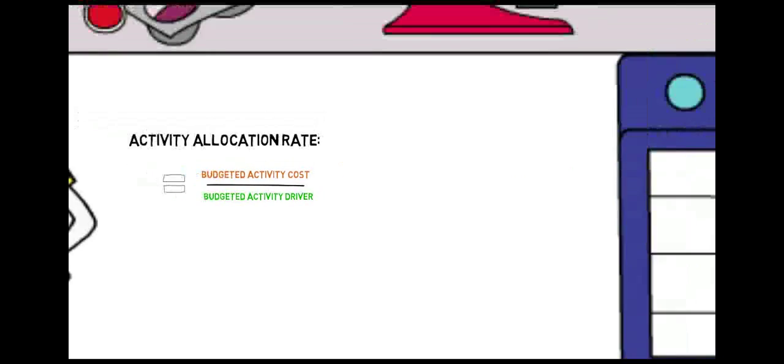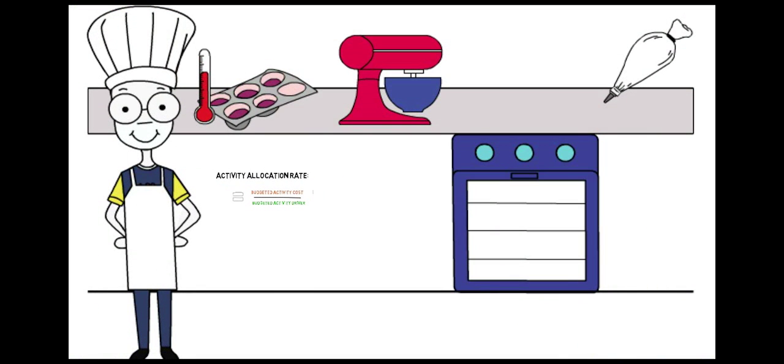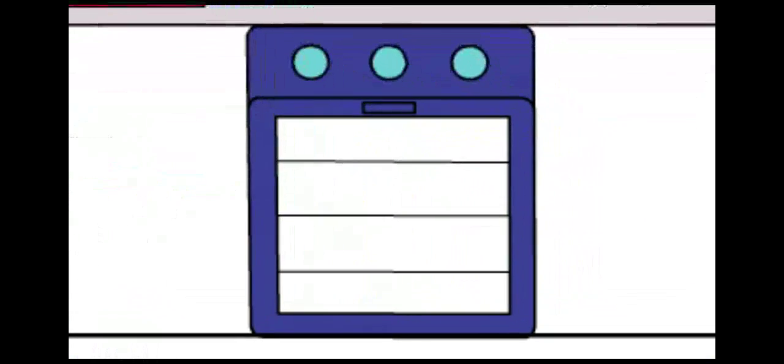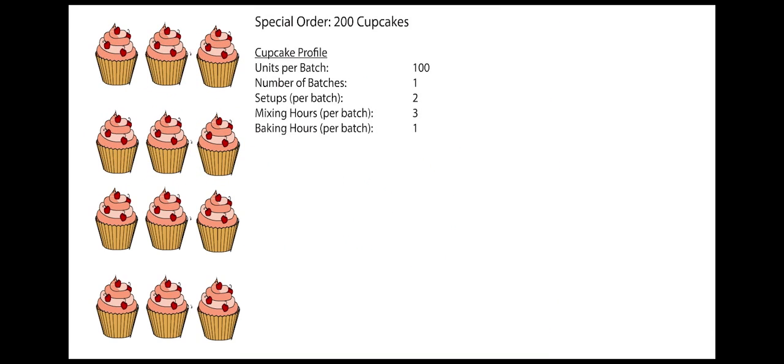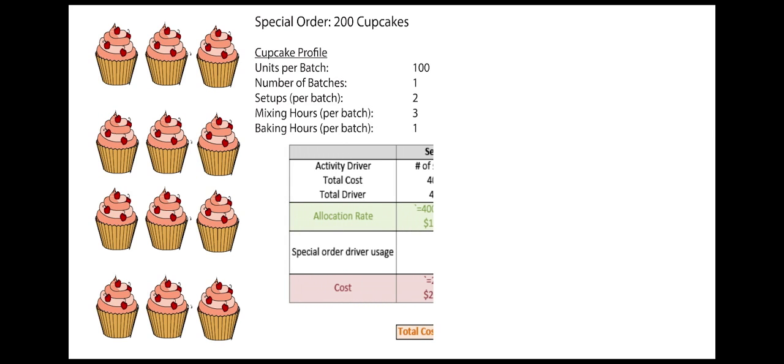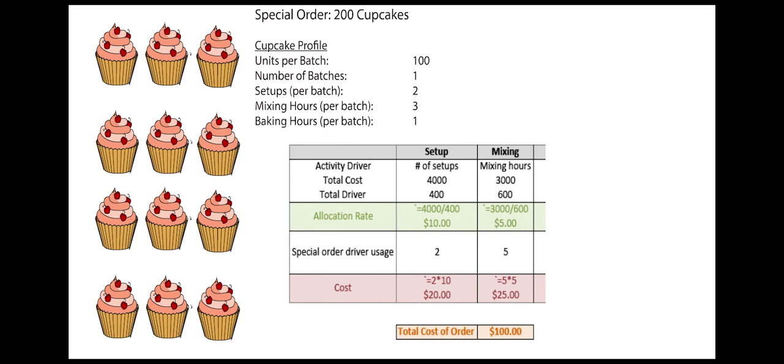Now that Bob has established an ABC system for his business, he can now apply it to his product range. He has a special order coming up of 200 cupcakes but isn't sure what the price should be. Bob figures out how much of the cost drivers of each activity are used by the cake and uses rates to apply the overhead to the product.